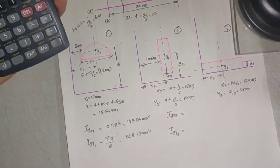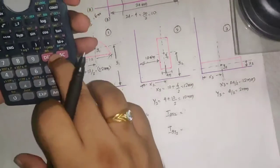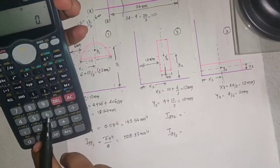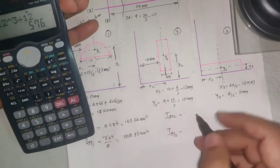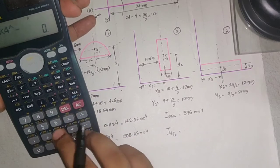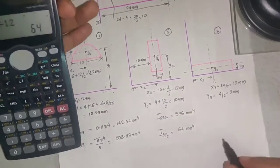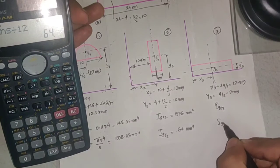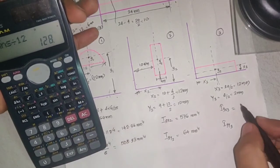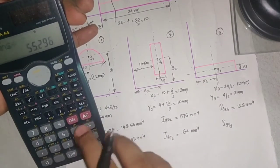For calculating about the x-axis, the first dimension considered is parallel to the x-axis. For element 2: IGx2 = 4 × 12³/12 = 576 mm⁴, and IGy2 = 12 × 4³/12 = 64 mm⁴. For element 3: IGx3 = 24 × 4³/12 = 128 mm⁴, and IGy3 = 4 × 24³/12.